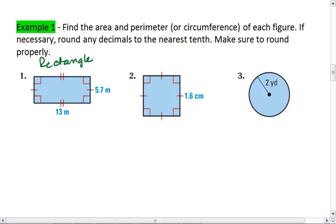In problem 2, I have an equilateral and equiangular, so a regular quadrilateral that is a square. Four congruent sides, four congruent angles. And lastly, I have a circle.